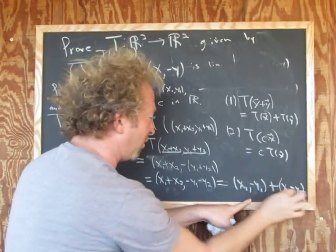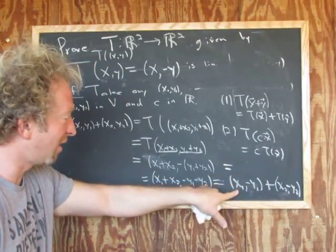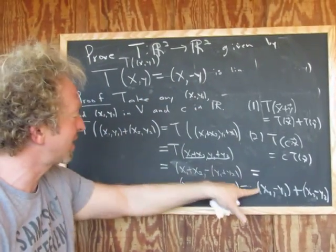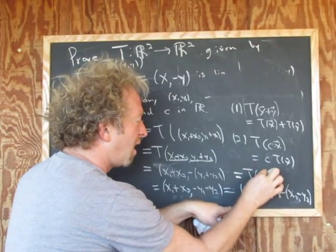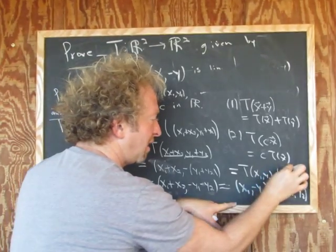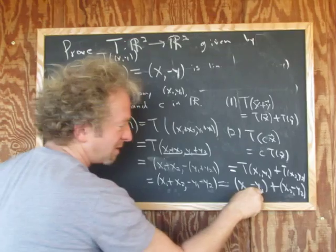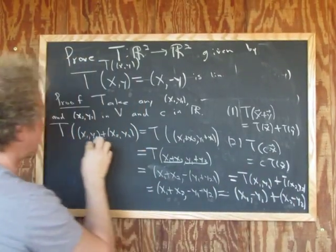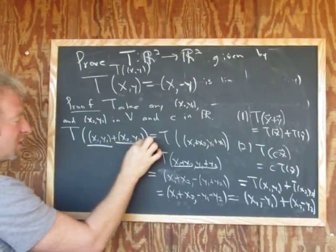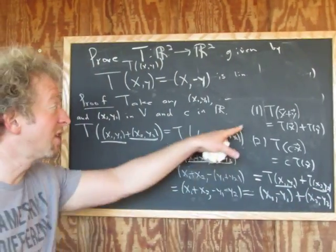This, I'm going to come up here. This is just the reflection, right? X negative Y. It's X1 negative Y1. This is T of X1, Y1. That's this piece. And this is T of X2, Y2. And that's it, right? Because this is this and this is this. We showed that T of this vector plus this vector is T of the first vector plus T of the second vector. So that shows the first condition.